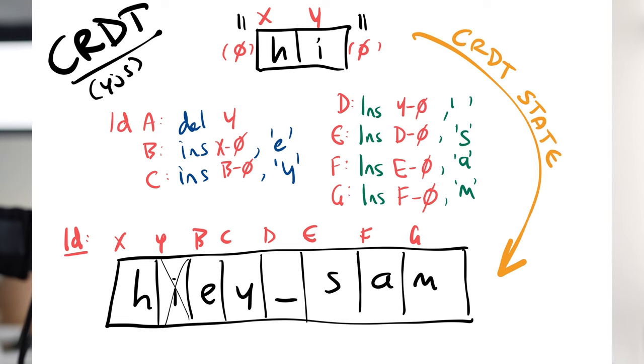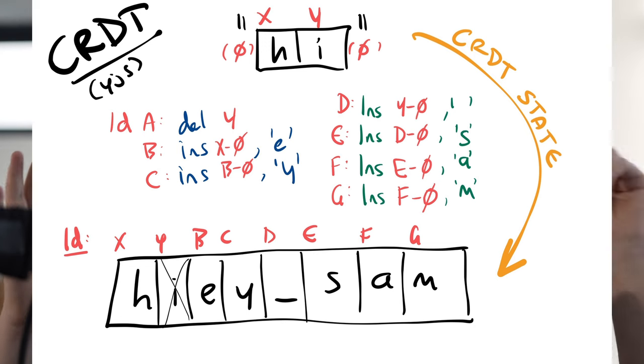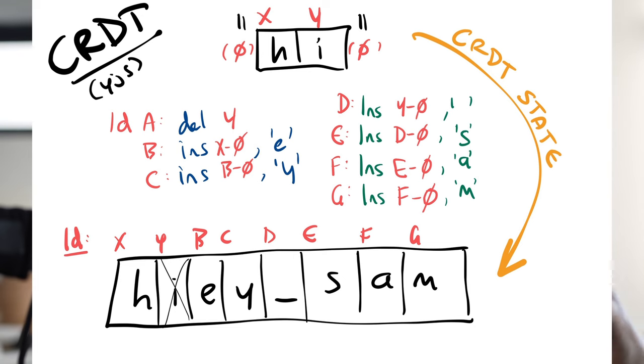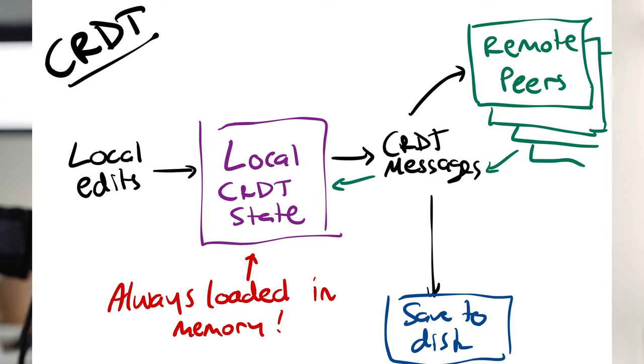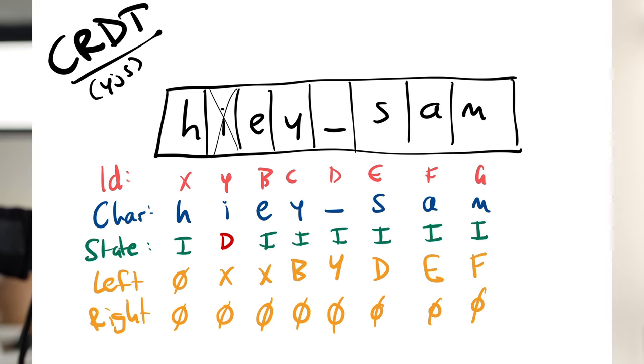CRDTs do something quite different. They create a CRDT object, and for a text document this is a big list or tree. Every item in that list corresponds to a character that was, at any point in history, inserted and maybe deleted in the document. This list typically only grows over time as the document is edited. To update this data structure, instead of just saying insert at position 1,000, we first transform every change into a special CRDT message format. On my local computer — editing using YJS, which is a CRDT library — I type a key at position 1,000. My local computer finds position 1,000 in the CRDT and inserts a new special CRDT item there.